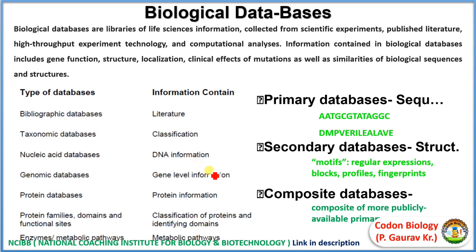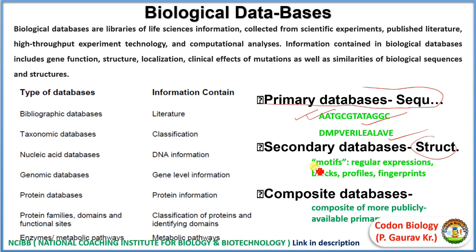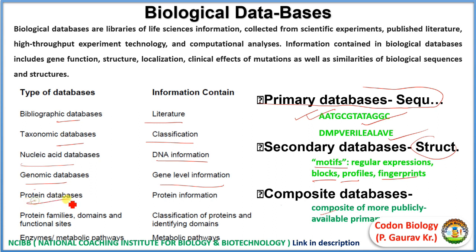What are biological databases? There are three types. One is the primary database — it contains sequences, like protein sequences or nucleotide sequences. The next is the secondary database, which contains structure, maybe motifs, blocks, profiles, or fingerprints. The last is the composite database — a collection or mixture of more than one type of database. We can also categorize as: bibliographic (literature), taxonomic (classification), nucleic acid (DNA information), genomic (gene-level), protein, and protein family/domain databases.